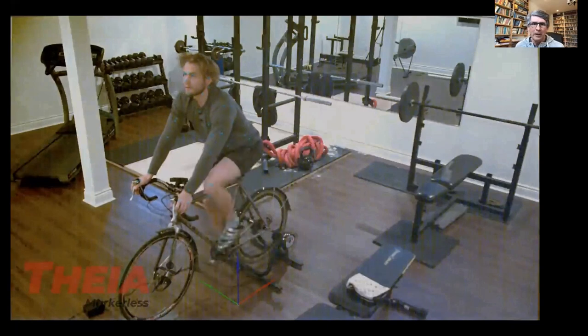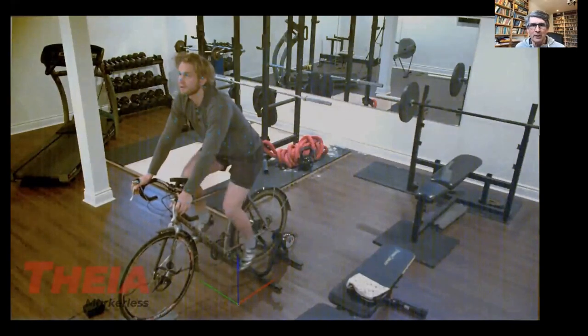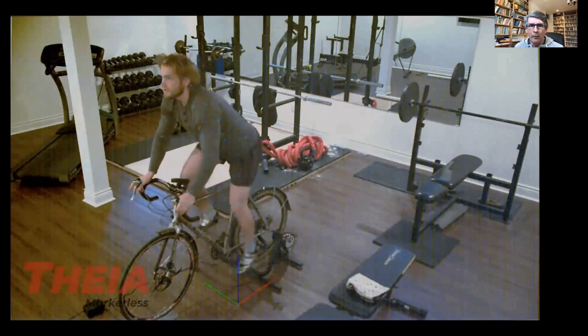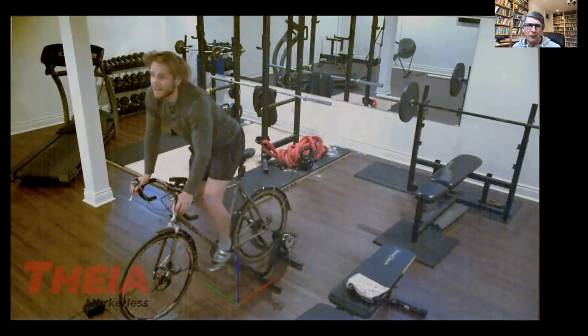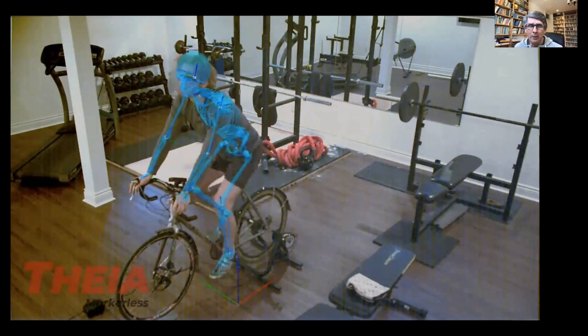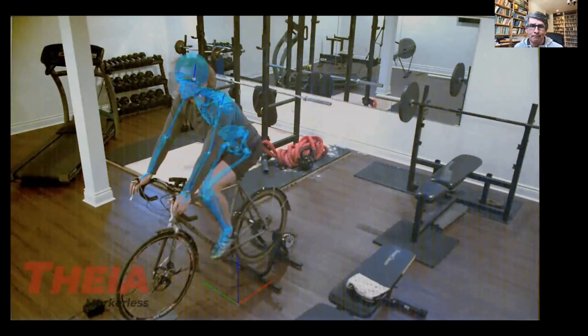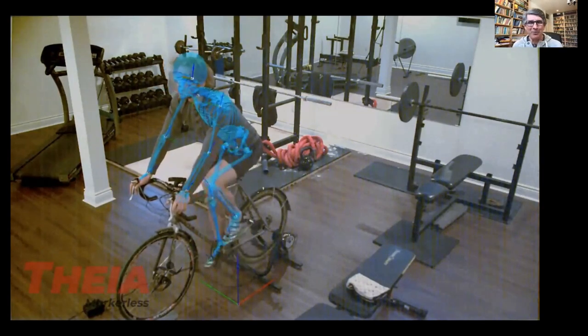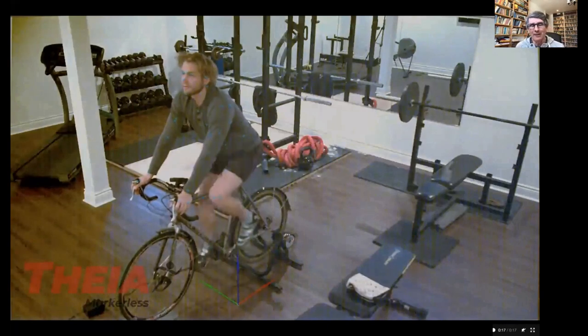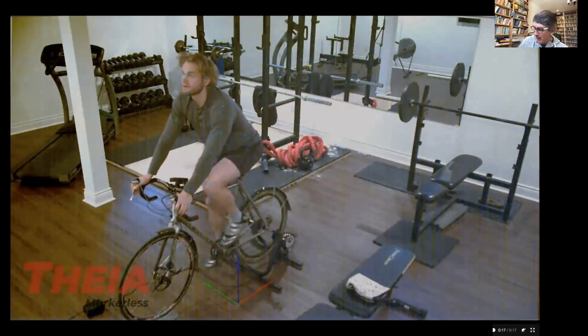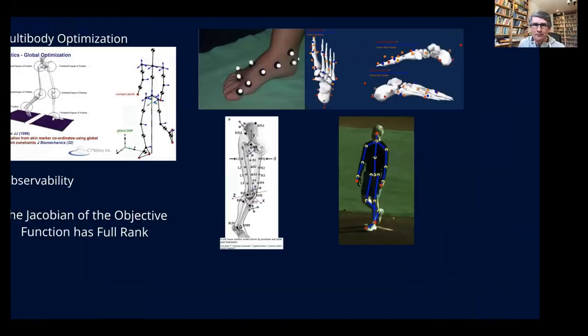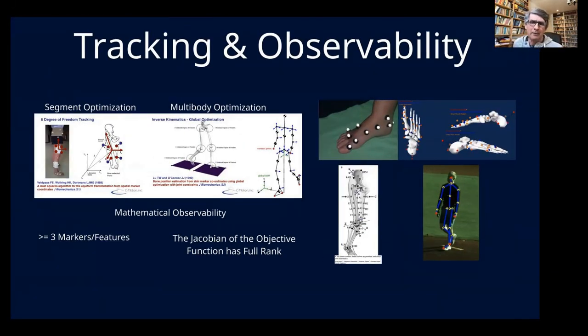If you're going to have a markerless solution or a marker-based solution, you put lots and lots of markers on. Now with marker-based solution, it takes time to put all those markers on. Markerless, it just takes time to train the algorithm. Tracking is often called pose estimation. Pose estimation actually refers to a single frame of data, and tracking refers to the collection of contiguous frames.